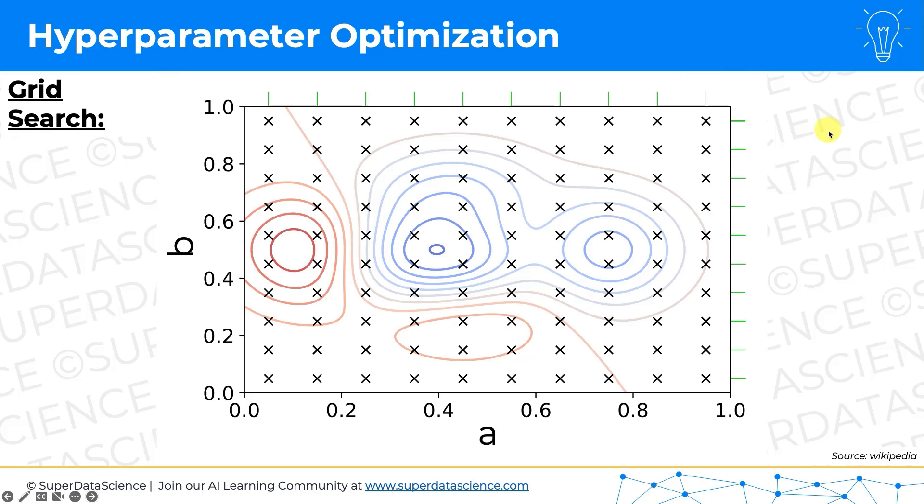And then what the algorithm will do for you is it will actually just test out all the possible combinations. So as we can see, every one of these x's is a test that the algorithm ran. And then out of all of them, it will return the best one. So maybe the best one here is this one or one of these ones. It didn't get to the final actual maximum, but it got very close. So it'll tell you what the hyperparameter was. So let's say this one was the best one. Hyperparameter A was 0.35, hyperparameter B was 0.45. And it'll tell you what the R squared was. So that's grid search.